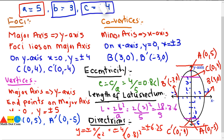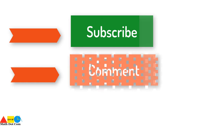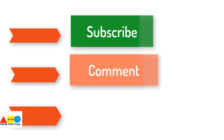This is how you can find the different elements of an ellipse from just its equation. In our next lecture, we will see how to find the elements of an ellipse that is shifted — where the center is not at (0, 0). Thank you for watching; please subscribe to our channel for more updates.